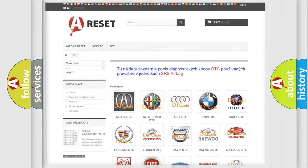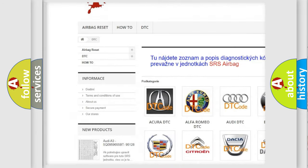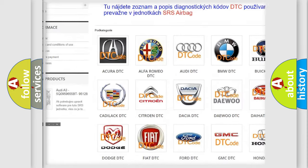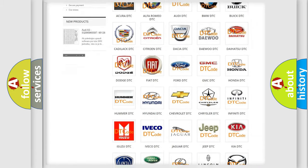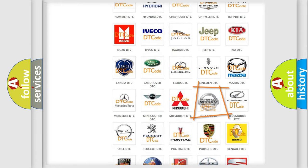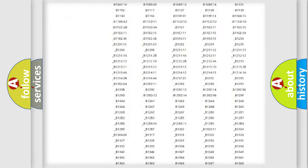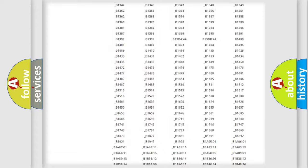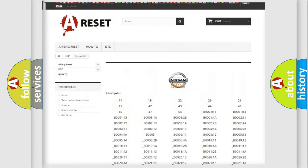Our website airbagreset.sk produces useful videos for you. You do not have to go through the OBD2 protocol anymore to know how to troubleshoot any car breakdown. You will find all the diagnostic codes that can be diagnosed in Nissan vehicles.